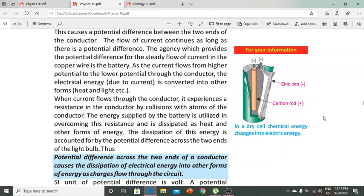The current flows from higher potential to lower potential through the conductor. This electric current converts to other forms such as heat or light.